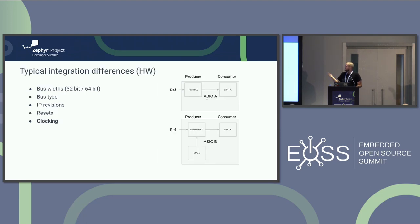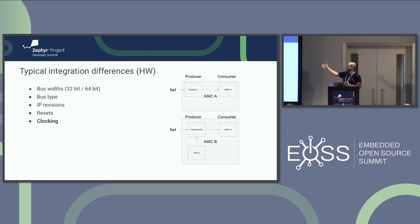If you look at the typical integration differences when you put together an ASIC, you have things like bus width — we saw good examples of that in the previous talk about system device tree — how you stitch things together, different bus types, different IP revisions which are almost the same but not quite, different resets where the reset sequencing of the IP might be different. But the thing I'm going to talk about today is clocking.